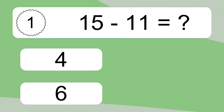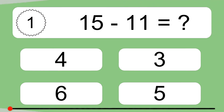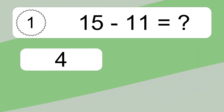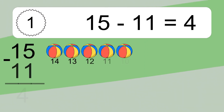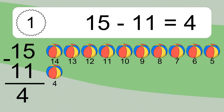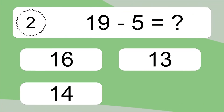15 minus 11 equals what? 15 minus 11 equals 4. Let's count it: 14, 13, 12, 11, 10, 9, 8, 7, 6, 5, 4.